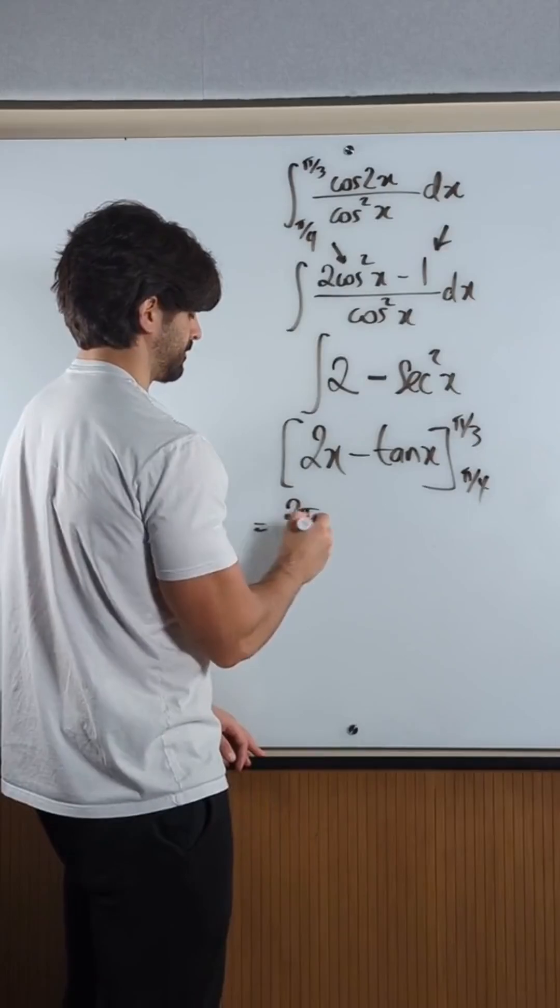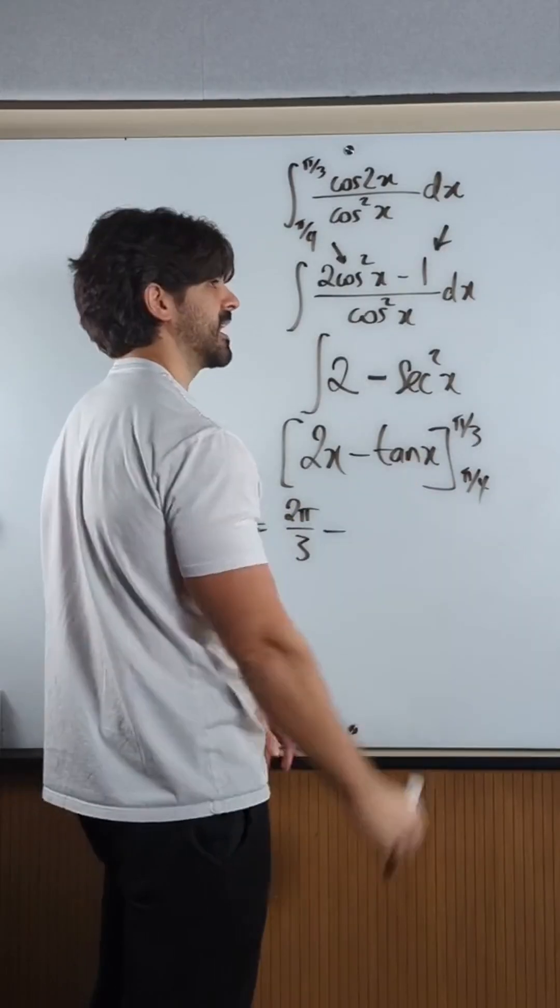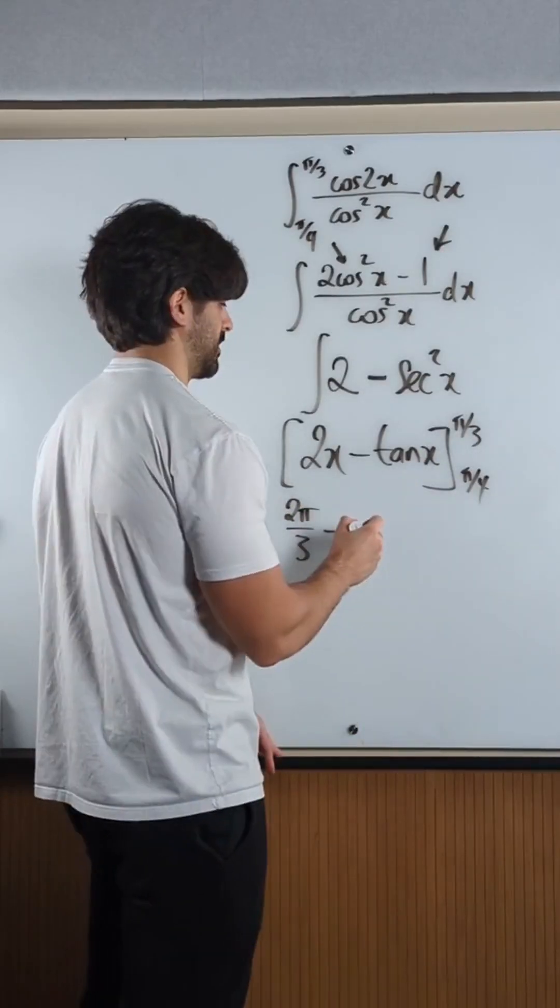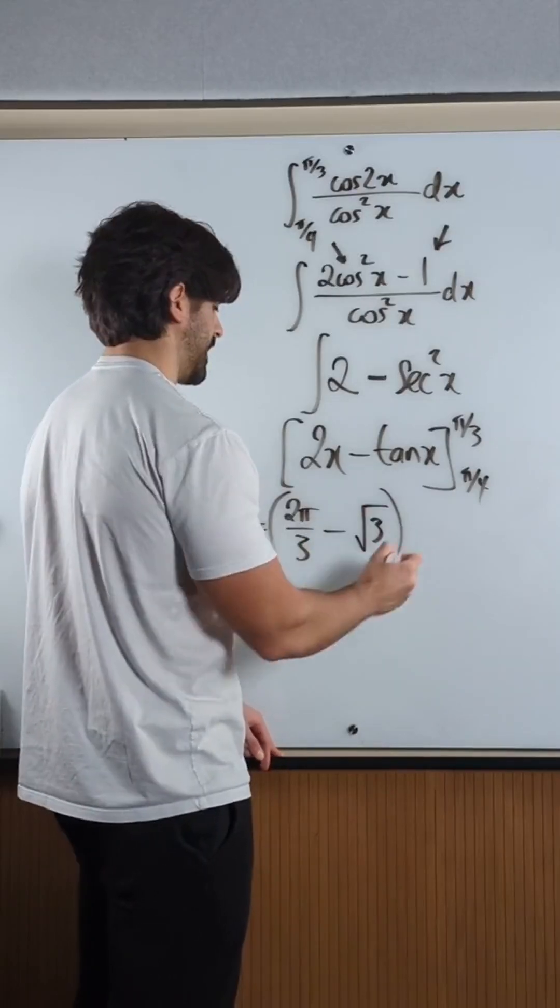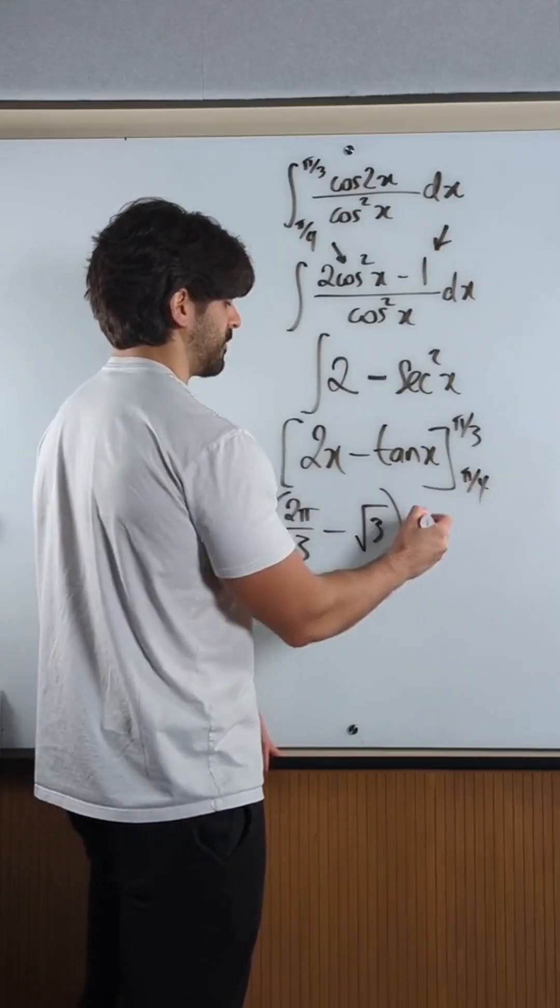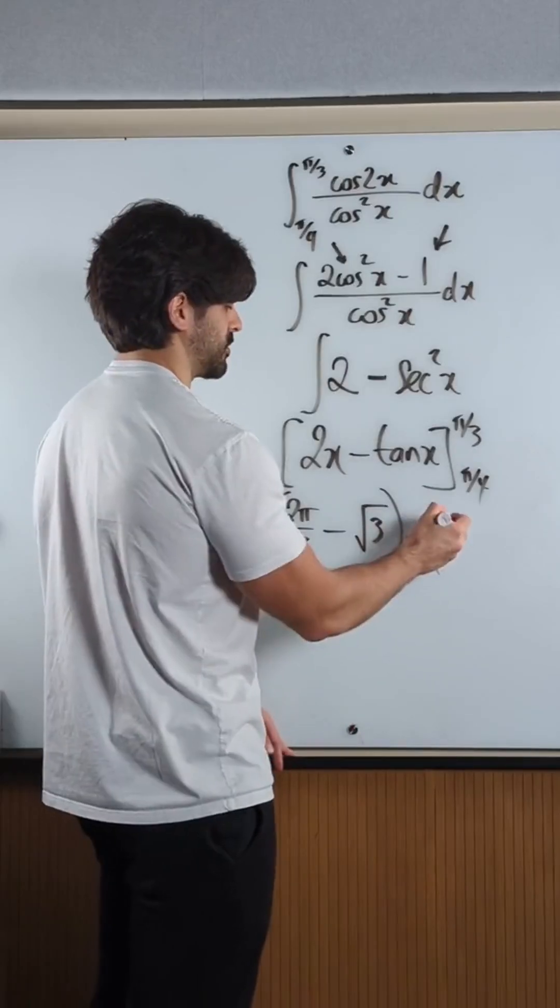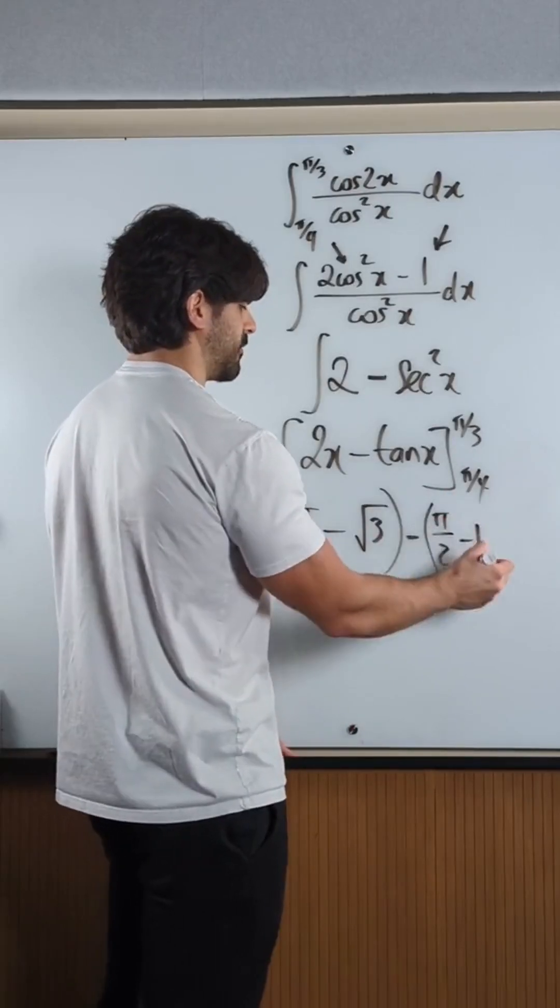2 pi over 3 minus tan of pi over 3, which is root 3, minus 2 pi over 4. 2 pi over 4 is pi over 2, minus tan pi over 4, which is 1.